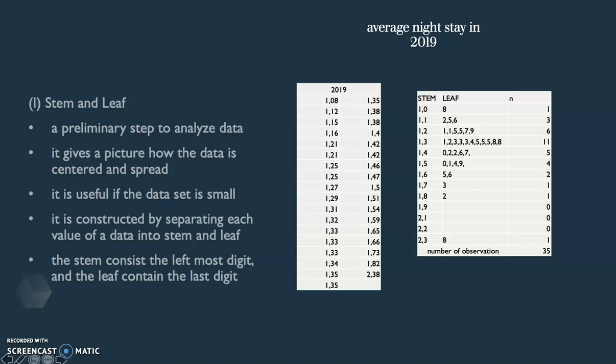Here I did it manually so I ordered the data from the smallest to the highest. And then manually I just ordered from 1.0 as the minimum, the smallest stem, and then 2.3 as the highest stem. So this is the result. And the next thing you do is just you plot it. 1.0 I have only 8, and 1.1 I have 2, 5, 6, and so on. So this is the result of the stem and leaf.